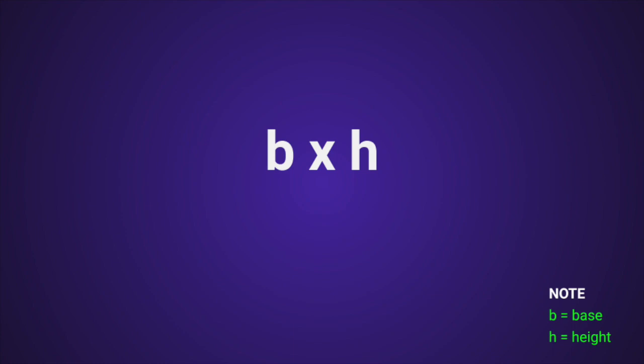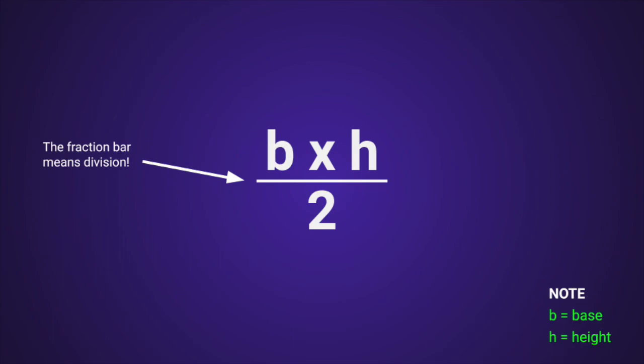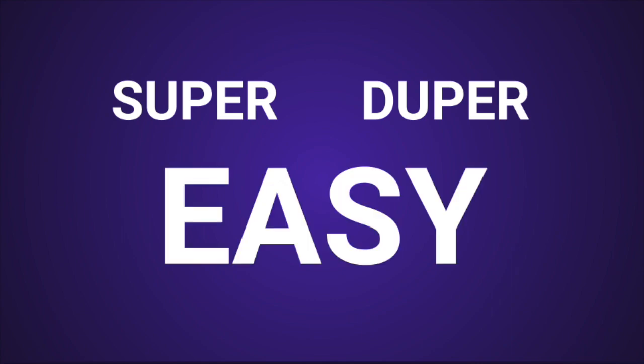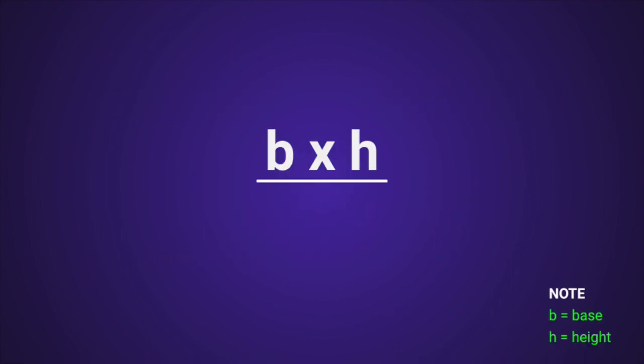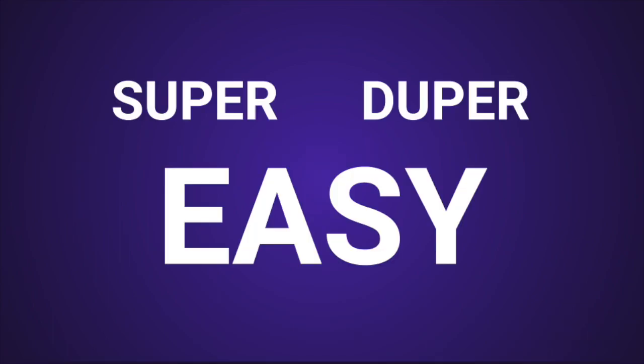BASE TIMES HEIGHT DIVIDE BY TWO — these two steps are all you've gotta do for you to find the answer, you see. Cause areas of triangles are super duper easy.